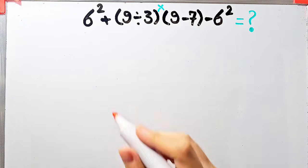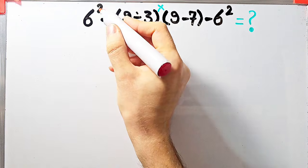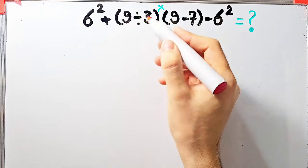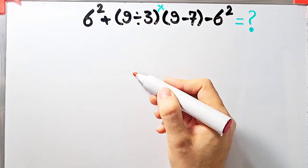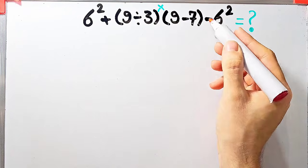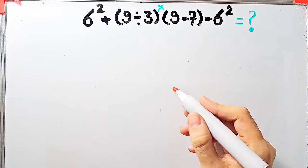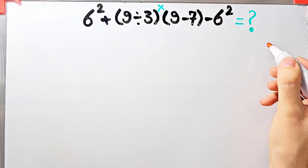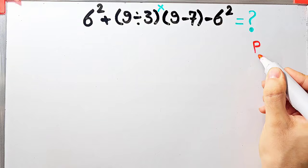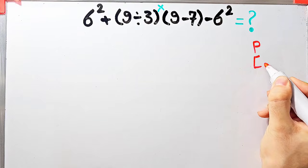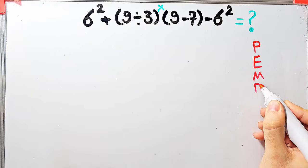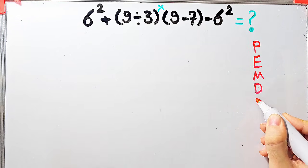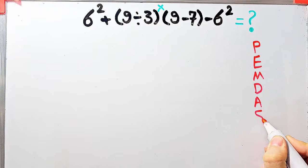Let's solve this question step by step. In this question we have exponents, addition, parentheses, division, multiplication, and subtraction. To solve this question we need to follow the order of operations, which is PEMDAS. PEMDAS shows the priority of mathematical operations, and if you don't pay attention to this rule you get the wrong answer.